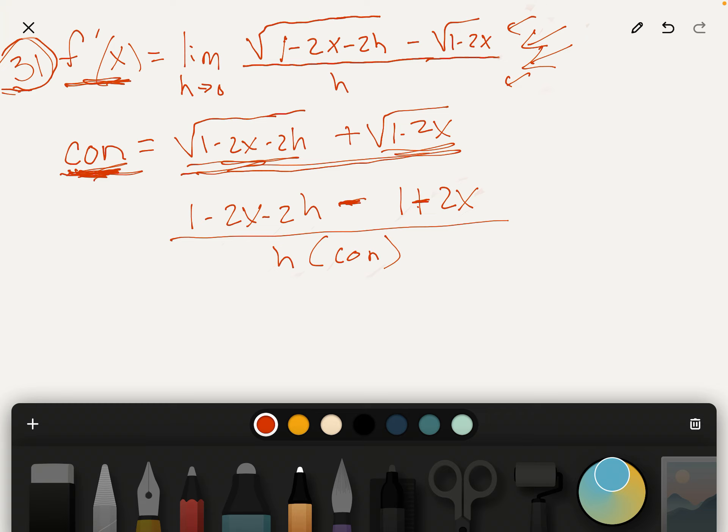And look what happens. So the numerator simplifies. We've got a 1 and a minus 1. We've got a minus 2x and a plus 2x.